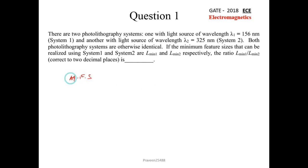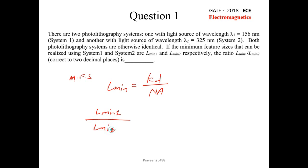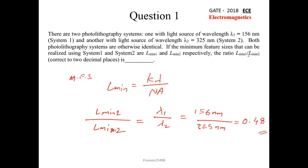We know the minimum feature size is given as L_min = K·λ / NA, where NA is numerical aperture, K is a constant, and λ is wavelength. So minimum feature size is directly proportional to wavelength. Therefore, the ratio L_min1 / L_min2 = λ₁ / λ₂ = 156 / 325 = 0.48. The answer to two decimal places is 0.48.